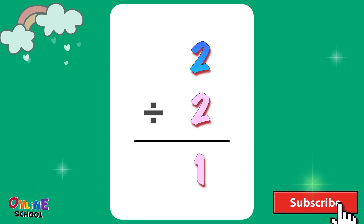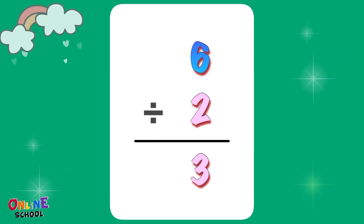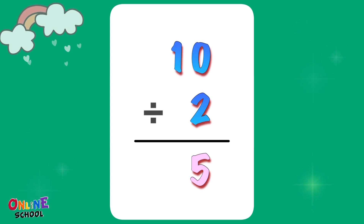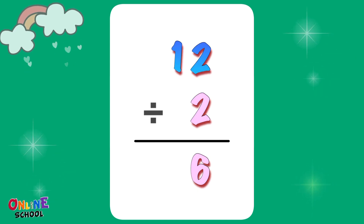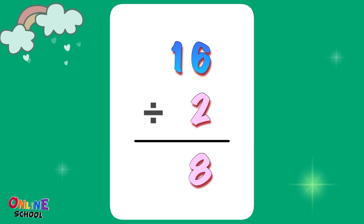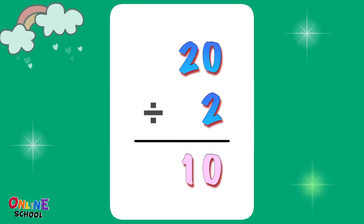Divided by 2. 2 divided by 2 equals 1. 4 divided by 2 equals 2. 6 divided by 2 equals 3. 8 divided by 2 equals 4. 10 divided by 2 equals 5. 12 divided by 2 equals 6. 14 divided by 2 equals 7. 16 divided by 2 equals 8. 18 divided by 2 equals 9. 20 divided by 2 equals 10.